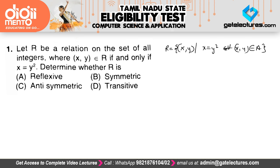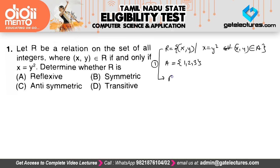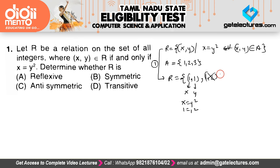What we will do is take some counter-examples to figure out whether the relation is reflexive, symmetric, anti-symmetric, or transitive. Assume set A has elements {1, 2, 3}. In relation R, which elements satisfy the condition? We have 1 comma 1, because if X is 1 and Y is 1, then X equals Y squared means 1 equals 1 squared, which satisfies the condition.